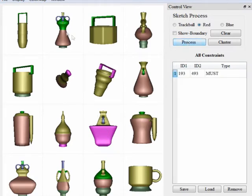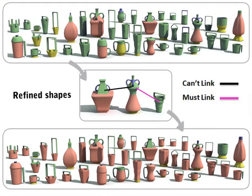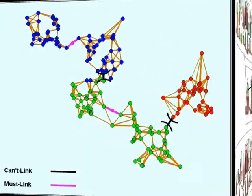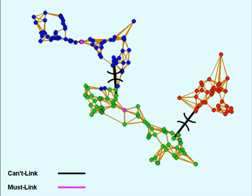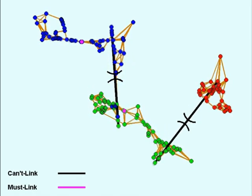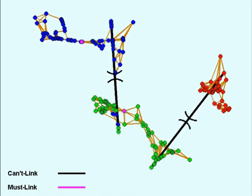A constraint is created by connecting a magenta superface and a green superface. The user can add a must-link constraint between superfaces that should have the same label, or a cannot-link constraint between superfaces that should belong to different labels. After adding the constraint, the co-segmentation of several shapes is refined. Secondly, a constraint clustering based on a novel spring embedding algorithm maximizes the influence of each constraint in the co-analysis.